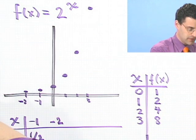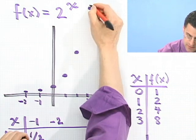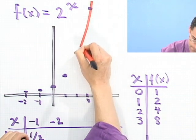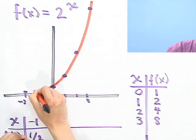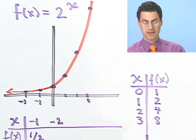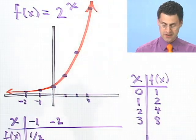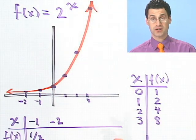So the graph, if I connect these points, seems to look like this. That, in fact, is the standard graph for an exponential function of this sort.